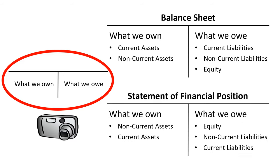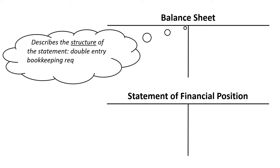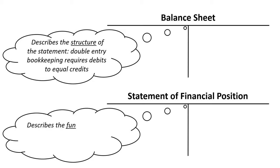Not just the name of this financial statement can differ; also the sequence in which the various categories are listed can differ. By calling it a balance sheet, you describe the structure of the statement — double-entry bookkeeping requires debits to equal credits. By calling it a statement of financial position, you describe the function of the statement: it presents the financial position of an entity.